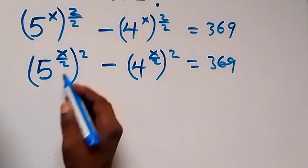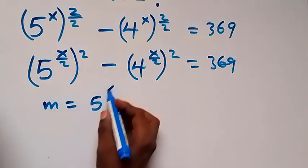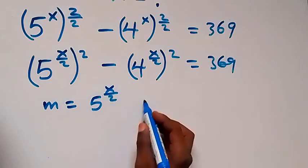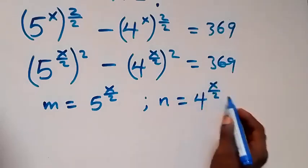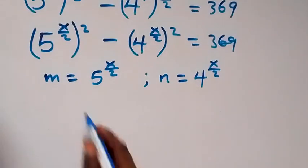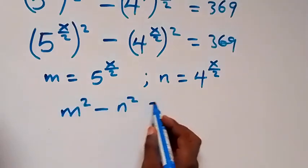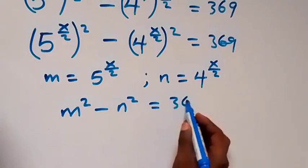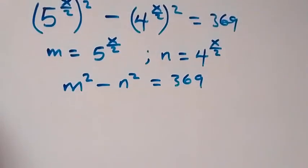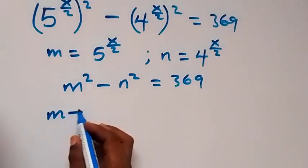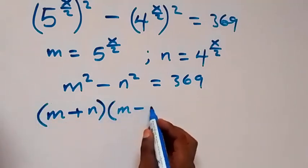In the next step, let letter m equal 5 raised to power x over 2, and let letter n equal 4 raised to power x over 2. Then we can replace this as m squared minus n squared equals 369. This is in the form of a difference of two squares, so we can write it as m plus n multiplied by m minus n.